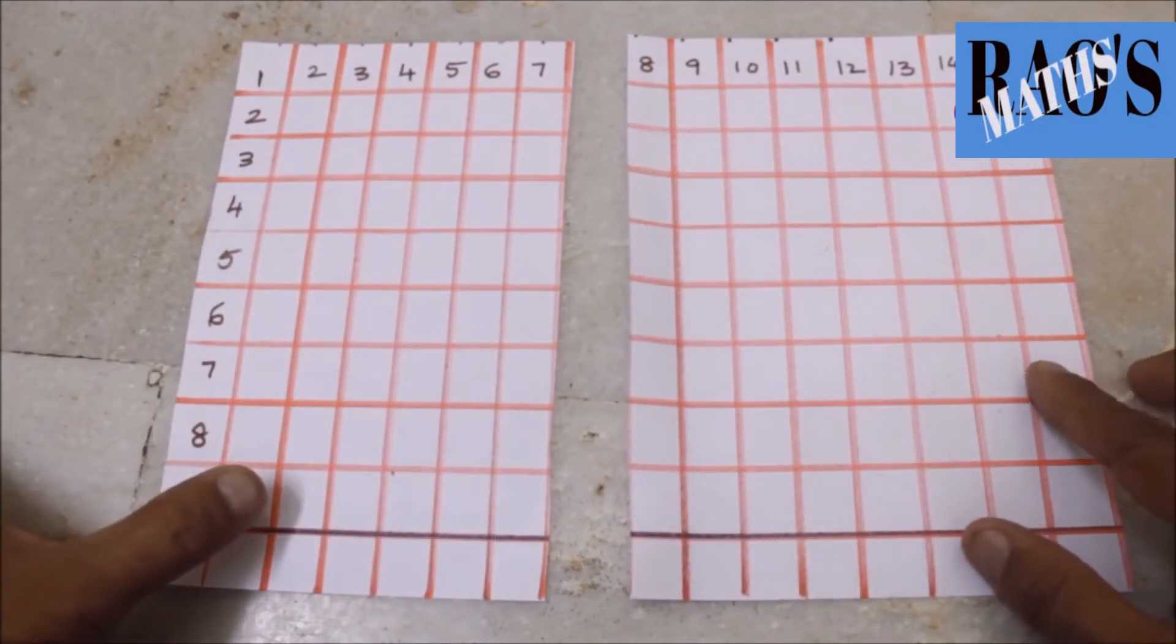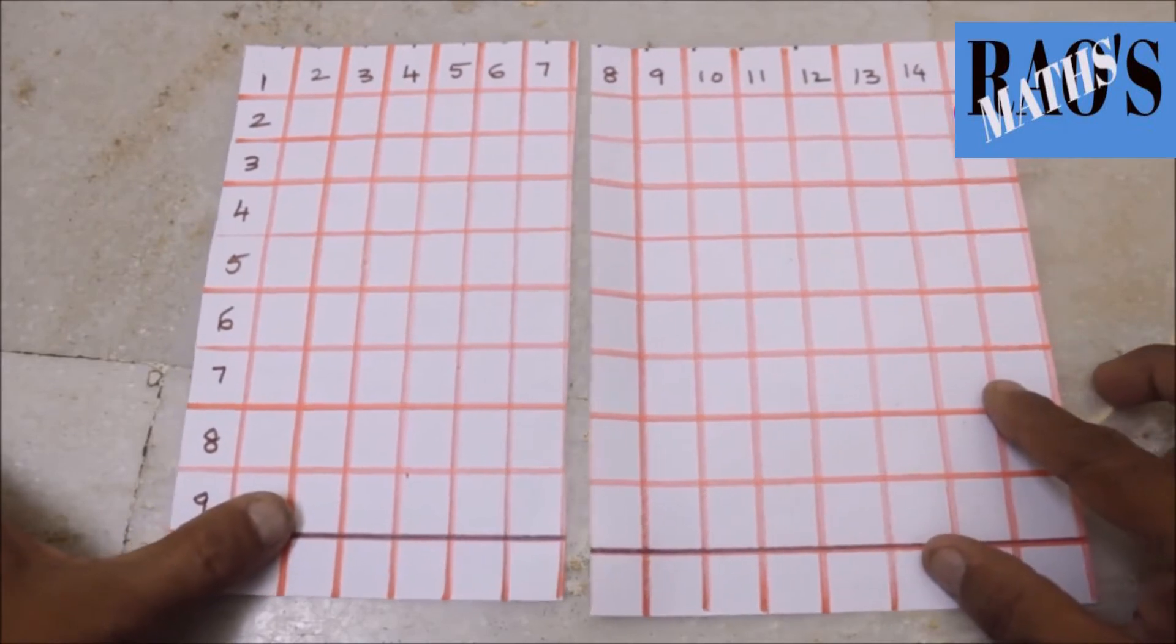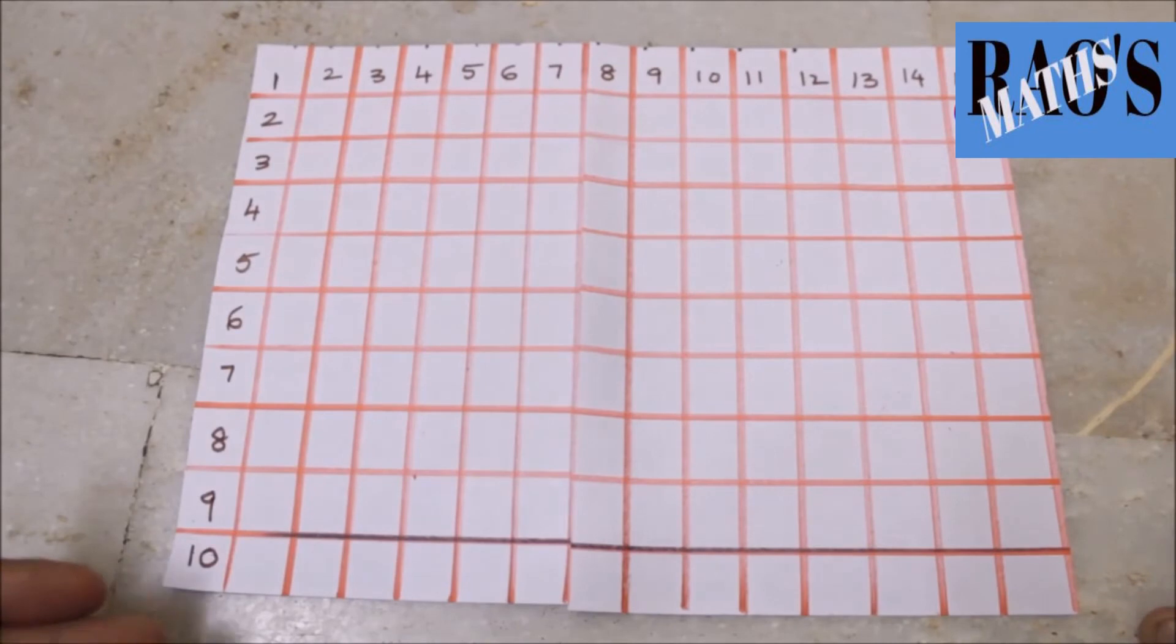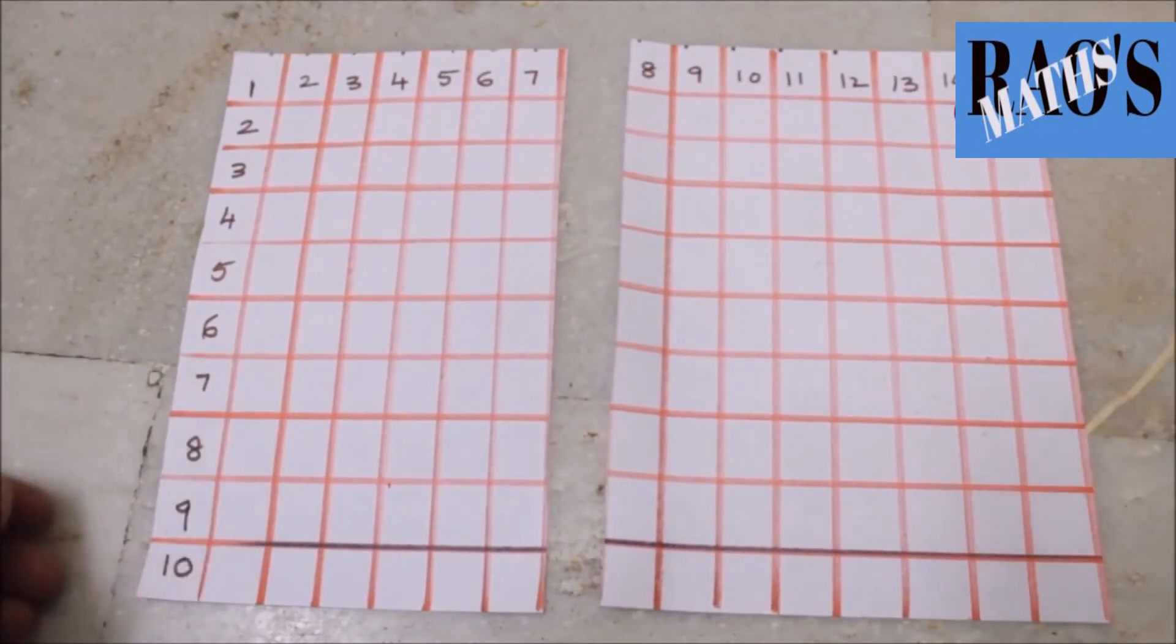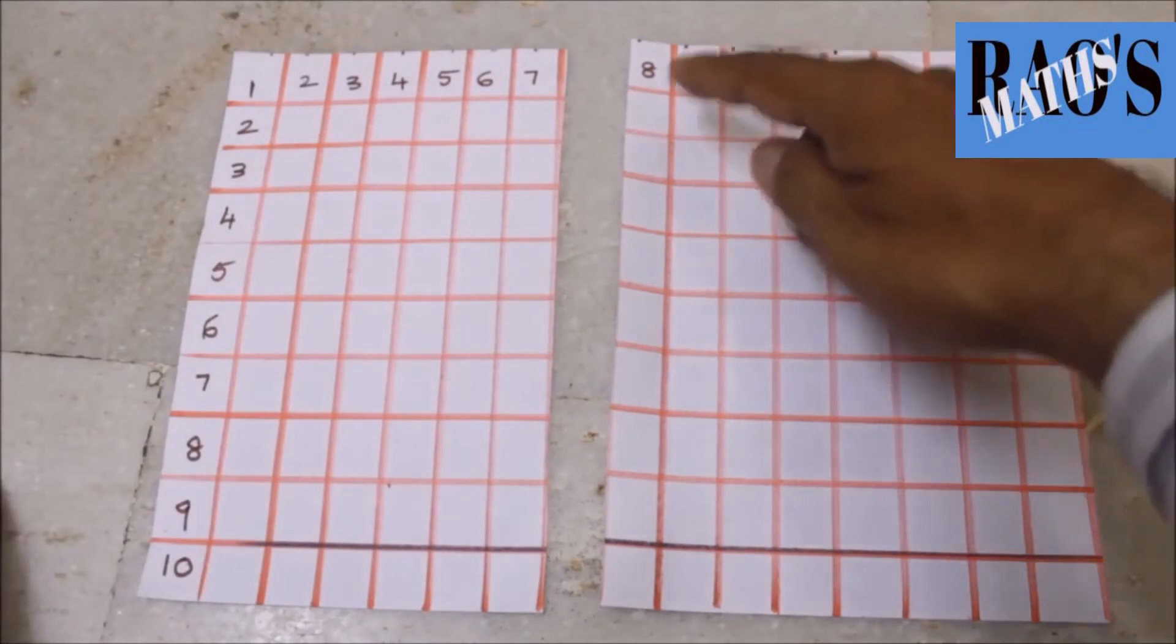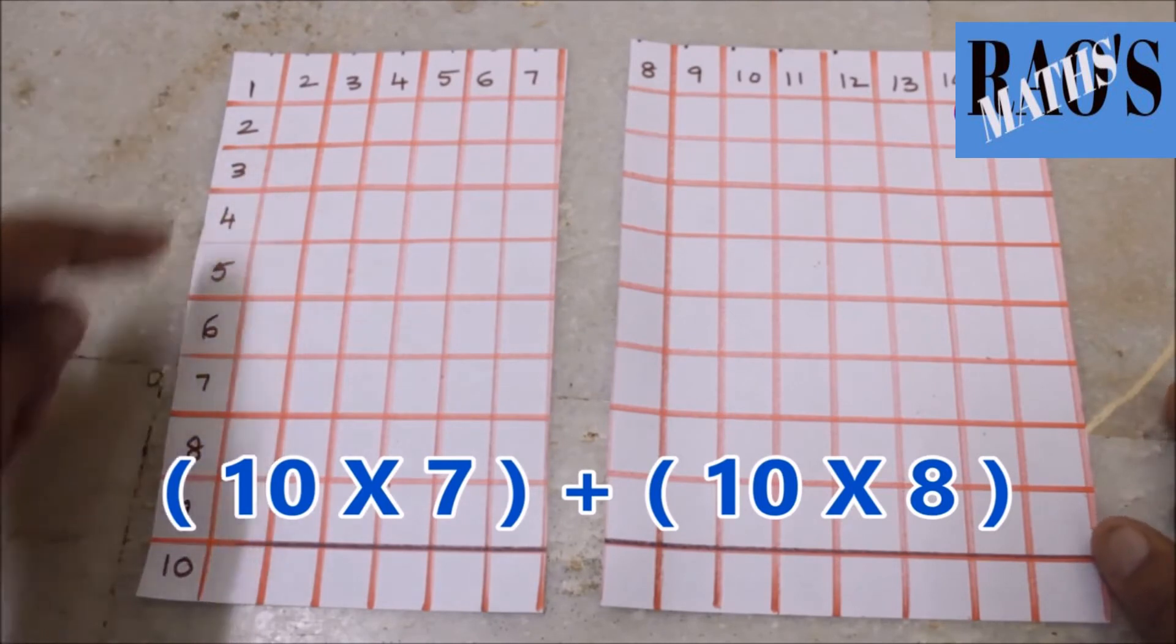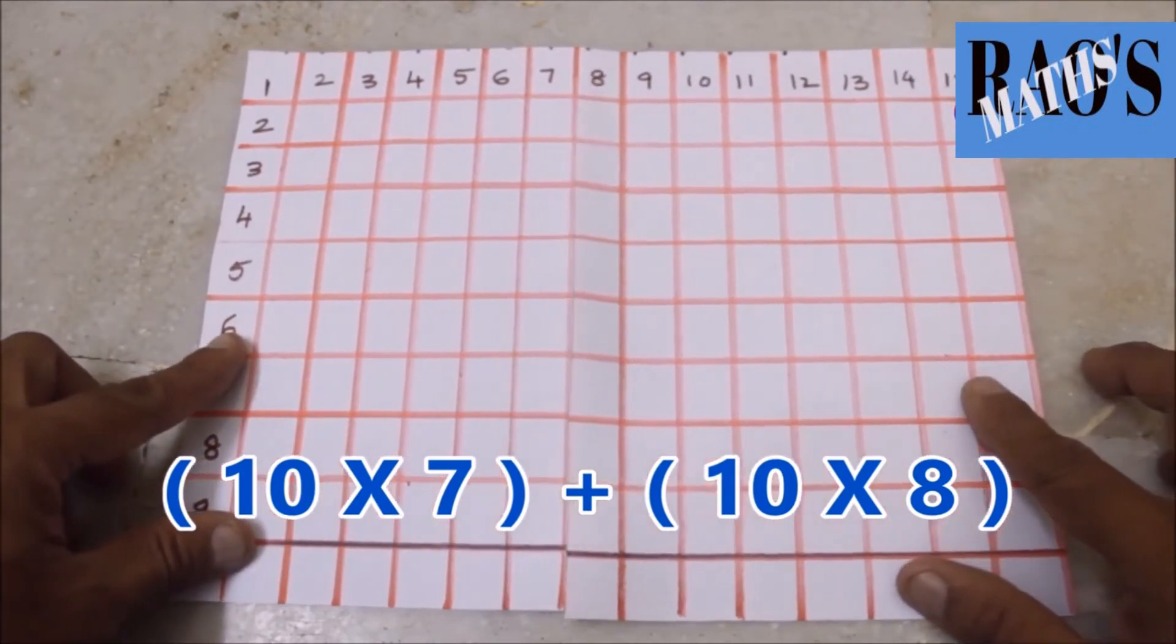So I use this formula. If I join this, what is common? Now the 10 is common. That is, when we split it, 10 into 7 and 10 into 8. So out of two multiplications, the factor 10 is common in both when I join together.